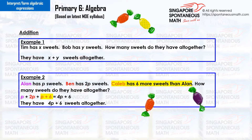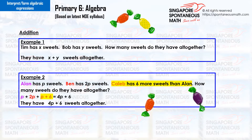Example 2. Alan has p sweets. Ben has 2p sweets. Caleb has six more sweets than Alan. How many sweets do they have altogether? Caleb has p plus six sweets. p plus 2p plus p plus six equals four p plus six. They have four p plus six sweets altogether.